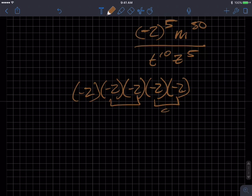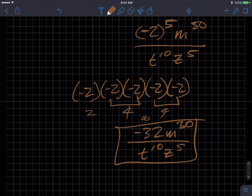So two times two is four, times two is eight, times two is 16, times two is 32. So we get negative 32 M to the 30th over T to the 10th Z to the fifth. And that's as far as you can go with that. So those were some examples demonstrating some of the shortcuts or rules. Thanks, bye.